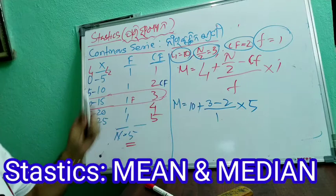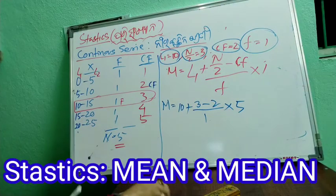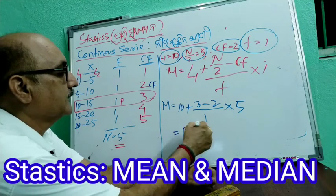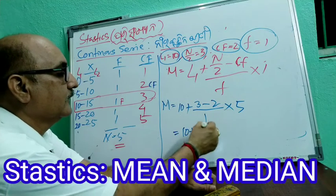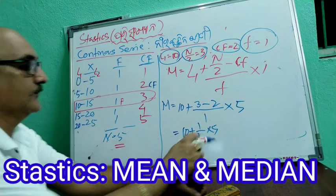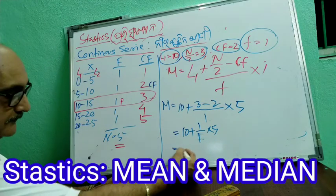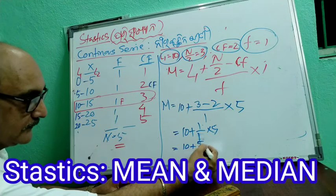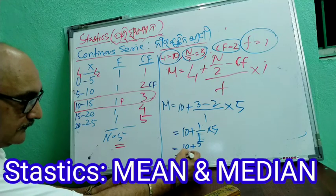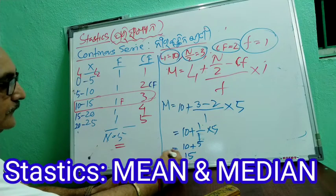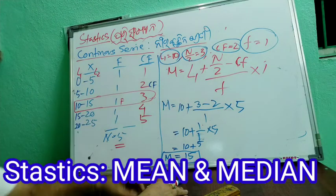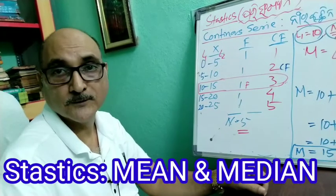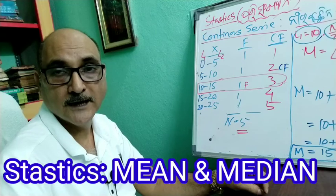So for the formula, it is not simple. We have shown 200 plus values. The formula is: L1 plus N by 2 minus CF by F into I. You have to keep this formula.